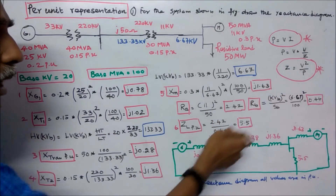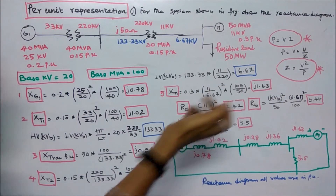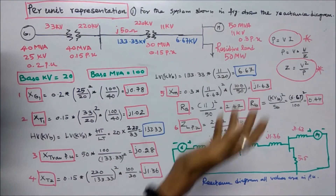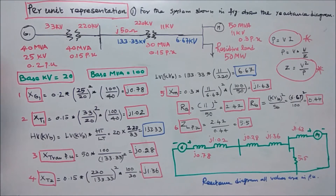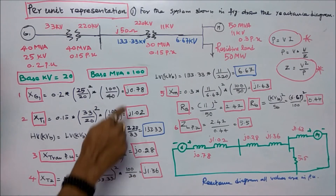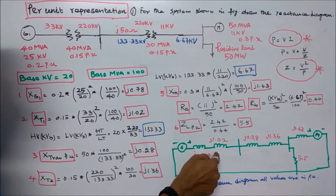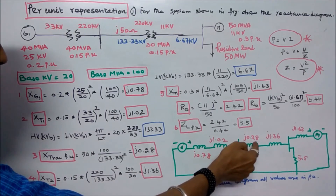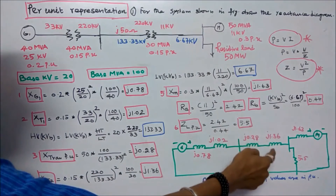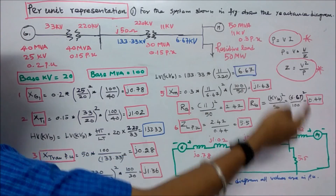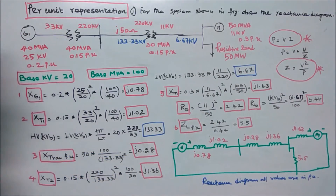Now I draw the reactance diagram. This is the generator at j0.78, transformer at j1.02, transmission line at j0.28, second transformer at j1.36, motor at j1.63, and resistor at 5.5. All values are in per-unit. With this I conclude my lecture. Thanks for listening.